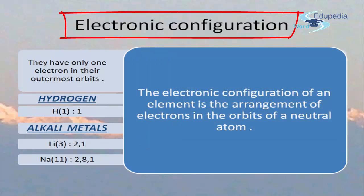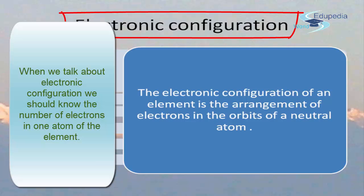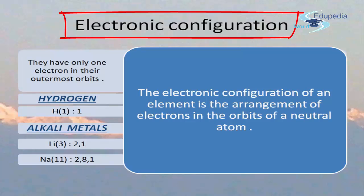The similarity between hydrogen and alkali metals is that they have only one electron in their outermost orbit or shell. Comparing hydrogen with alkali metal members lithium and sodium: lithium has atomic number 3 with configuration 2,1 and sodium has 2,8,1 — the outermost shell contains only one electron, which we call the valence electron. This is the first similarity — electronic configuration.